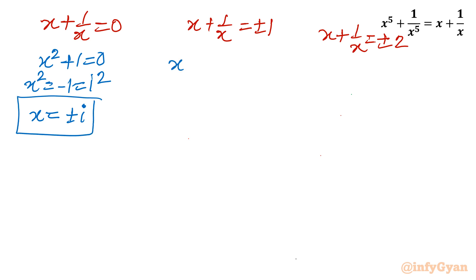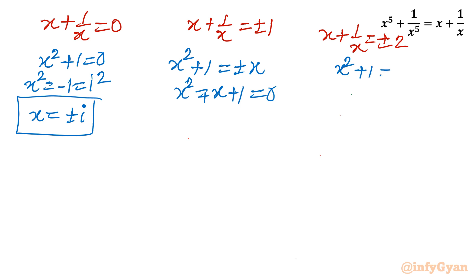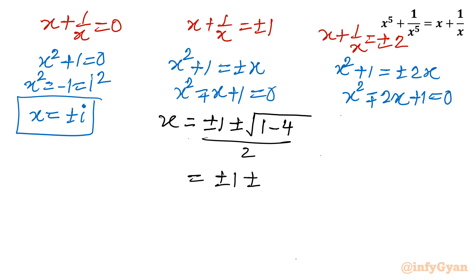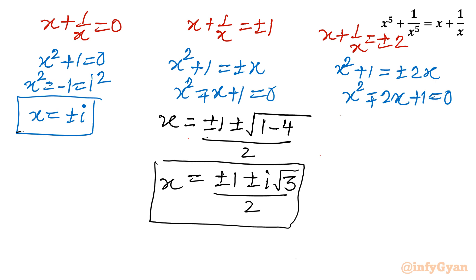For a equal to plus minus 1: multiplying by x gives x square minus plus x plus 1 equal to 0. Using the Sridhara Acharya (quadratic) formula, x equals (plus minus 1 plus minus square root of 1 minus 4) over 2, giving (plus minus 1 plus minus i root 3) over 2 — four complex solutions. For a equal to plus minus 2: x square plus 1 equals plus minus 2x, so x square minus plus 2x plus 1 equal to 0, which are perfect squares.